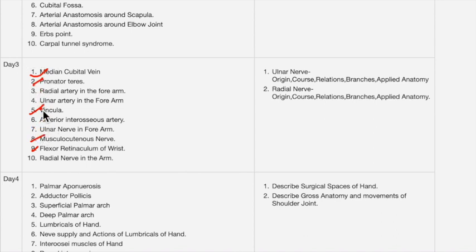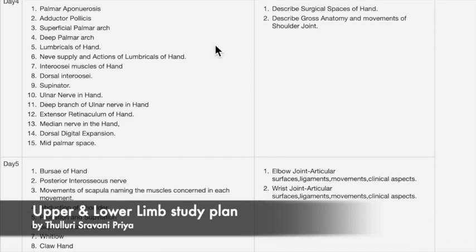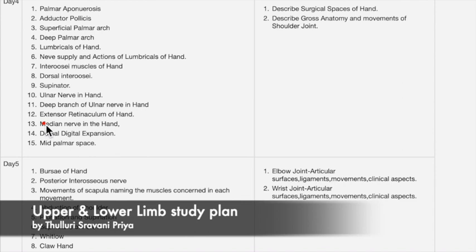The rest of the questions are also important — first prepare these priority questions, then move to the others. For day four, the important topics include surgical spaces of the hand and gross anatomy of movements of the wrist, which is a very very important question. Surgical spaces of the hand is also important. For short answers, first prepare palmar aponeurosis and supinator.